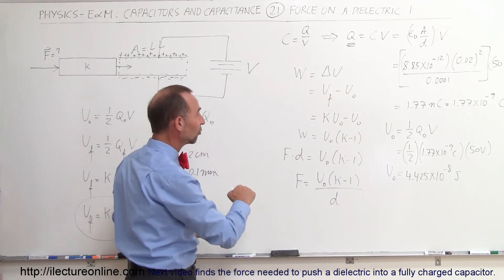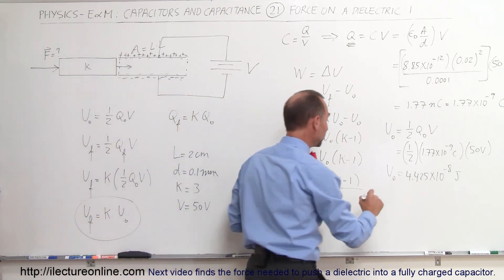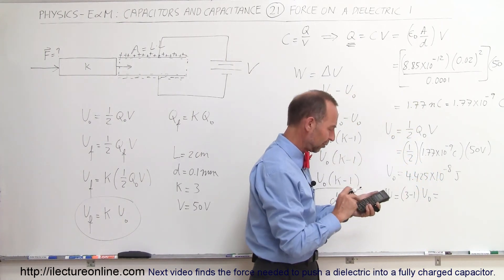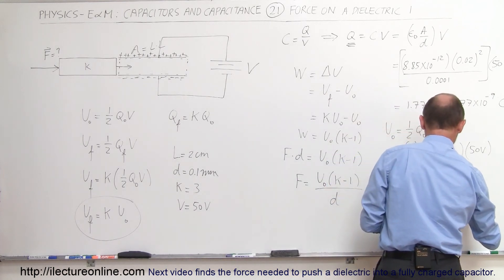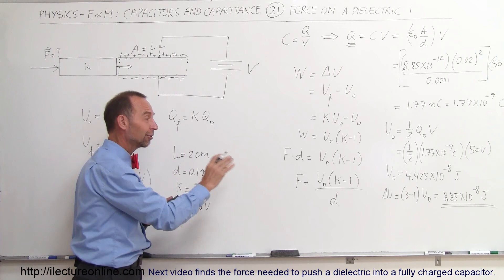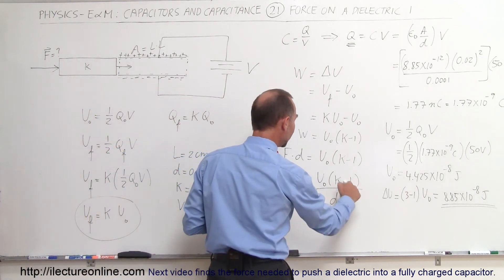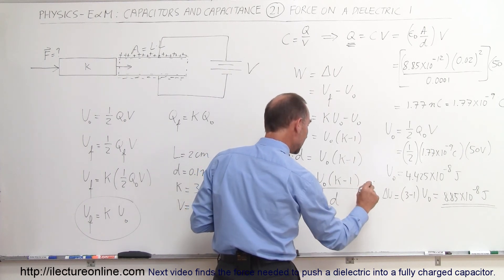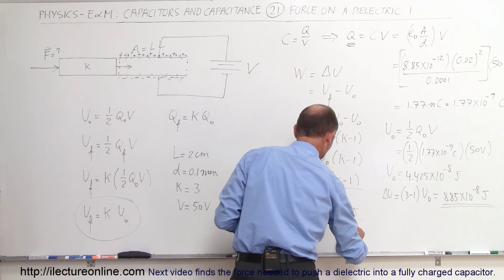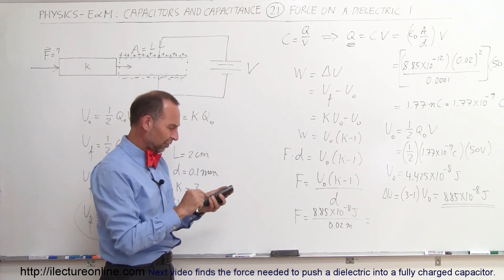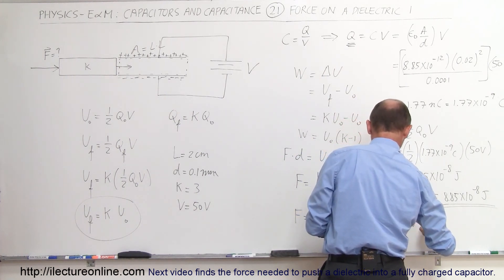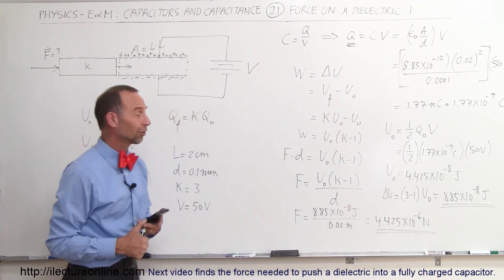What's the final energy? The delta energy would be (K minus 1) times U initial, which is (3 minus 1) = 2 times 4.425 × 10⁻⁸ joules, giving ΔU equals 8.85 × 10⁻⁸ joules. That's the increase in energy accomplished by pushing the dielectric between the plates. The force equals the increase in energy divided by the distance: F equals 8.85 × 10⁻⁸ joules divided by 0.02 meters, which gives a force of 4.425 × 10⁻⁶ newtons.